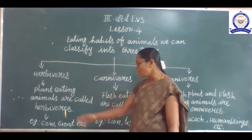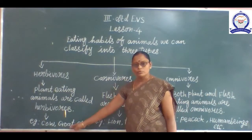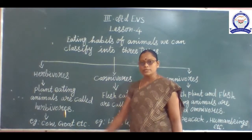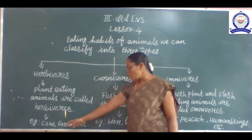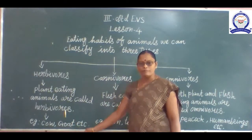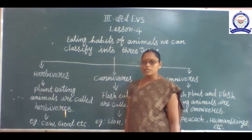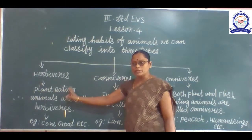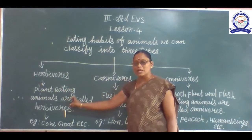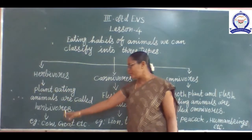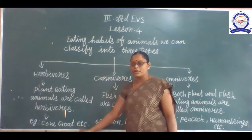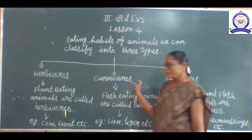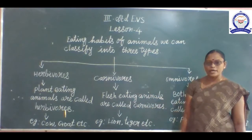For example, herbivores include cow, goat, deer, elephant, giraffe, etc. The next one is carnivores. Flesh-eating animals are called carnivores. For example, lion, tiger, cheetah, etc.